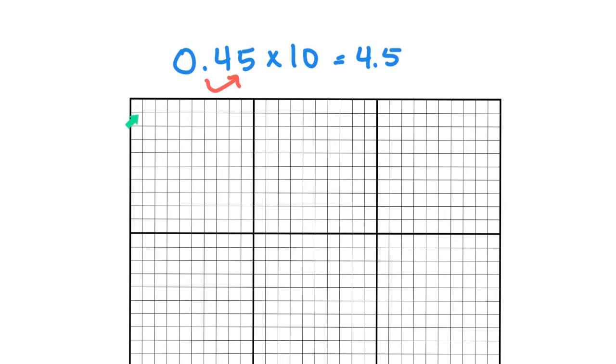We call each of these one hundredth. This is one hundredth, two hundredths, three hundredths, and so on. When multiplying 45 hundredths by 10, we need to represent 45 hundredths on the grid 10 times. Let's start with that. 10, 20, 30, 40, 45. That shows 45 hundredths.